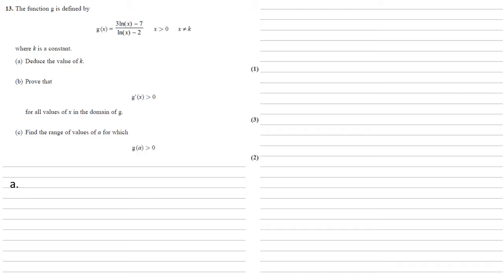k is going to be the value that gives us a zero for the denominator. So if ln x − 2 = 0, hence g(x) is not defined, then ln k must equal 2, therefore k = e².